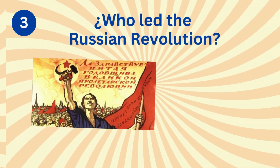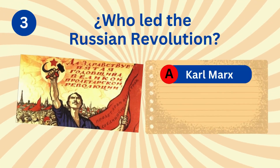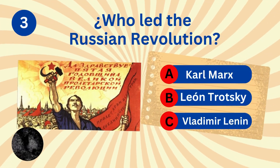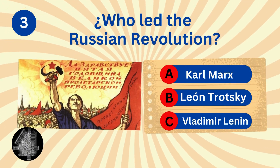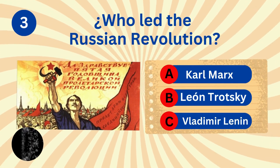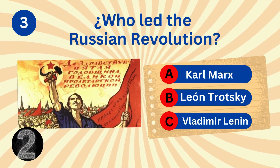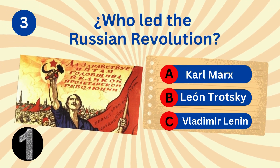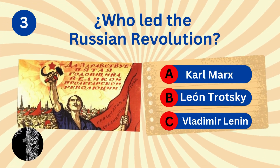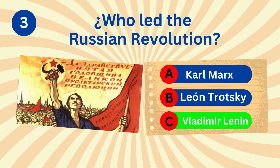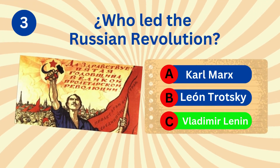Who led the Russian Revolution? Karl Marx, Leon Trotsky, or Vladimir Lenin? And the correct answer is Vladimir Lenin.